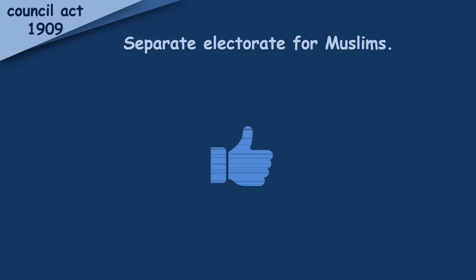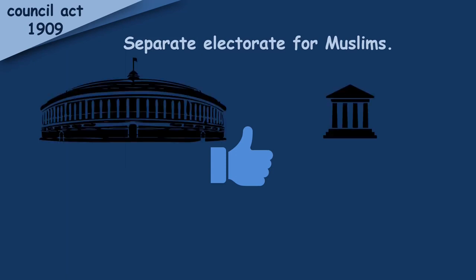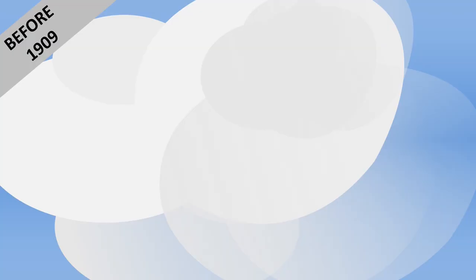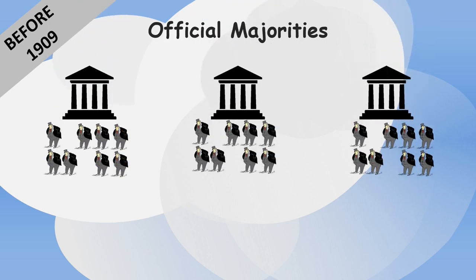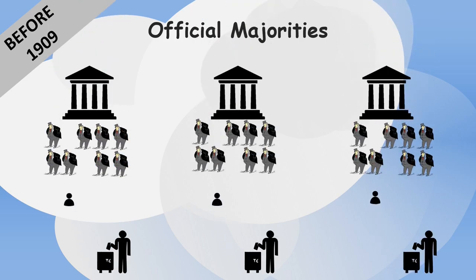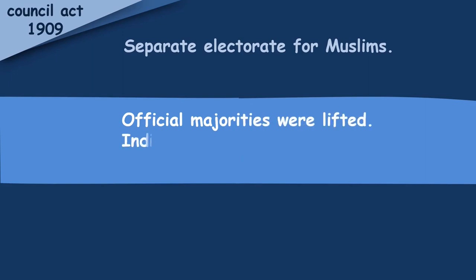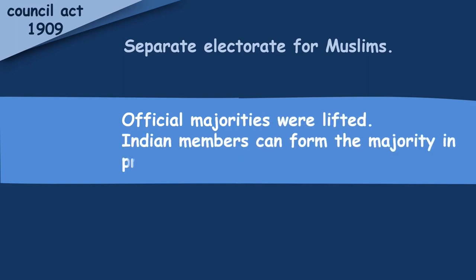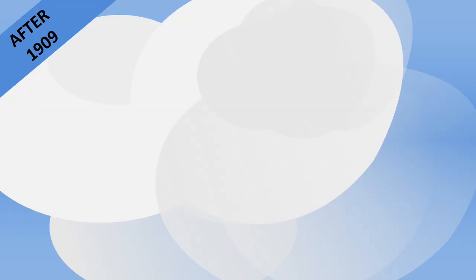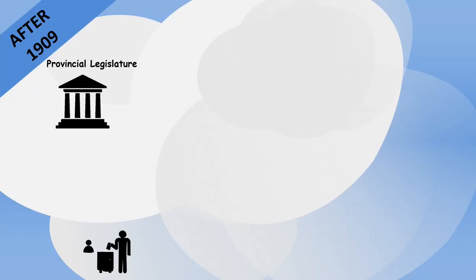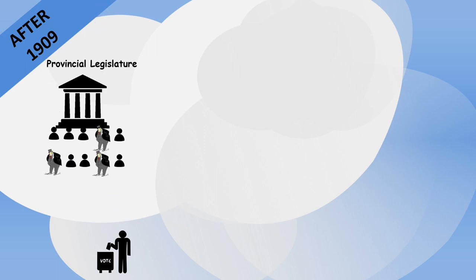There were some welcome moves too in this act. By this act, the legislative councils at the centre and provinces were increased in size. Before this act, there was a concept of official majorities, in which the majority of provincial members were appointed from civil service officials and only a minority of members were elected by Indians. But by this act, the official majorities were lifted, so Indian members could now form the majority in the provincial legislative bodies.